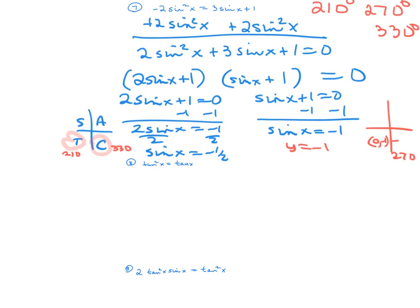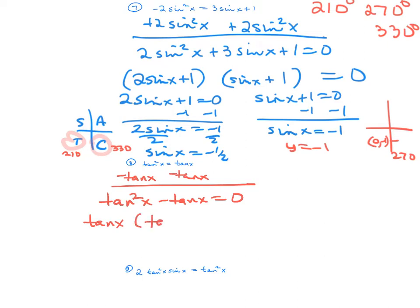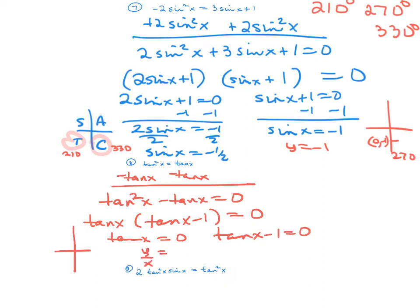Number 8 — I'm going to move the tan x to the other side because I need it set equal to 0. I'll factor out a GCF of tangent x, and I'm left with tan x minus 1. Setting each factor equal to 0: when tangent of x equals 0, remember tangent is y over x, so I'm looking for y to be 0. That gives ordered pairs (1,0) and (-1,0), corresponding to 0 degrees and 180 degrees.